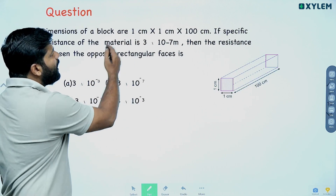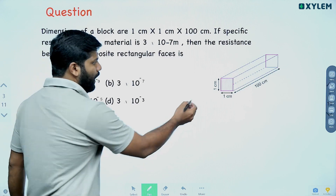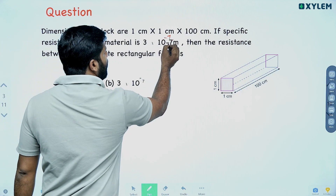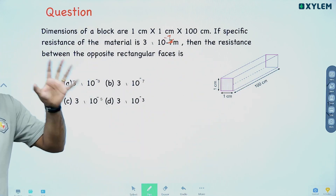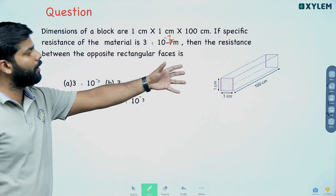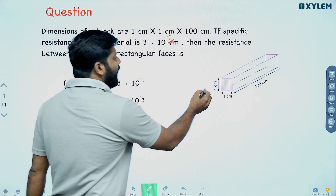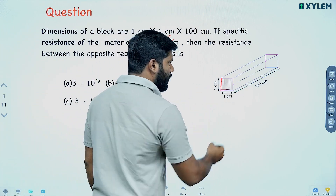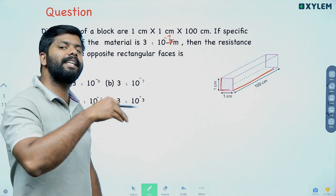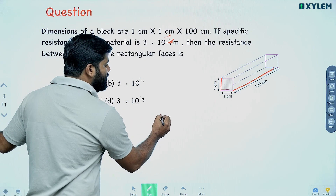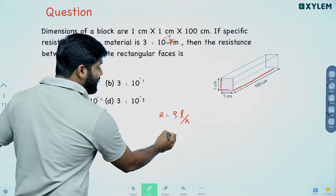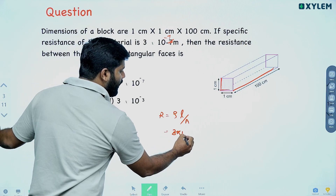Dimensions of a block are 1 cm × 1 cm × 100 cm. If the specific resistance of the material is 3 × 10⁻⁷ ohm-meter, then find the resistance between the opposite rectangular faces. The block is rectangular with side length 1 cm and total length 100 cm. The resistance equation is R = ρL/A. The resistivity is 3 × 10⁻⁷.